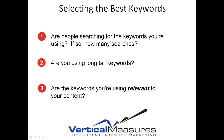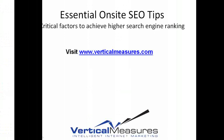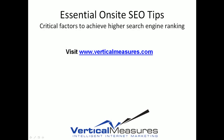When that happens, they're going to back out of the web page. And when Google does see it, if it happens many times over and over, Google begins to understand that the content you're presenting is not a fit for that keyword and you will be removed from the search engine rankings. That ends this session of essential on-site SEO tips — critical factors to achieve higher search engine ranking. If you have more questions, you can visit us at www.verticalmeasures.com. Thanks again and welcome to Intelligent Internet Marketing.